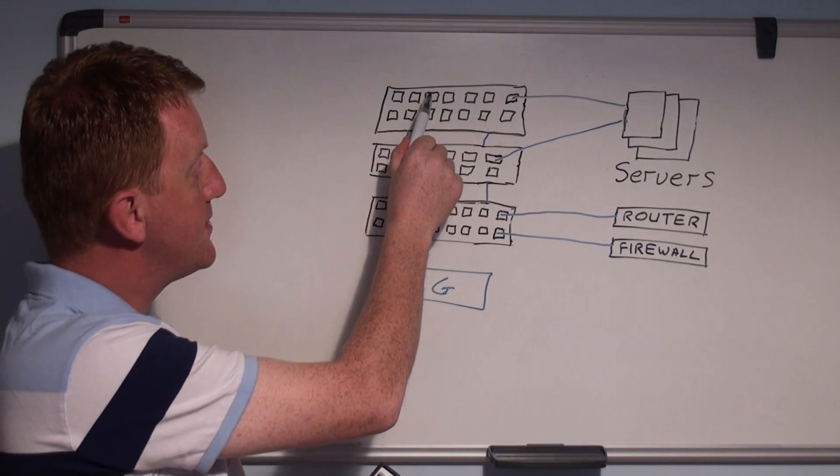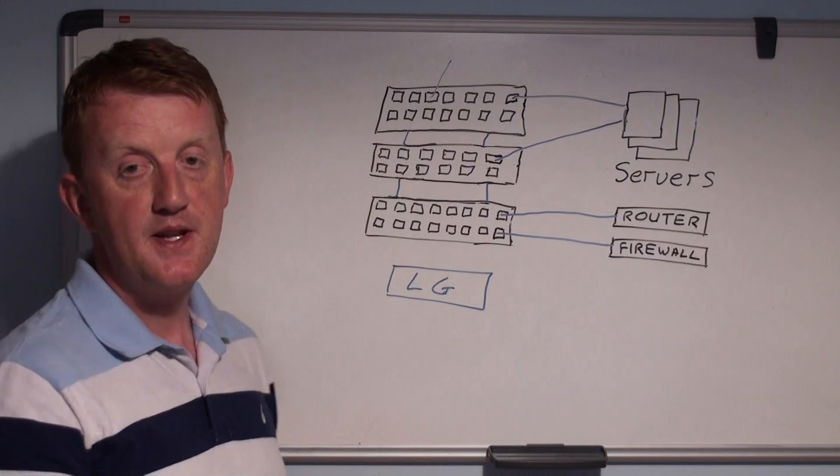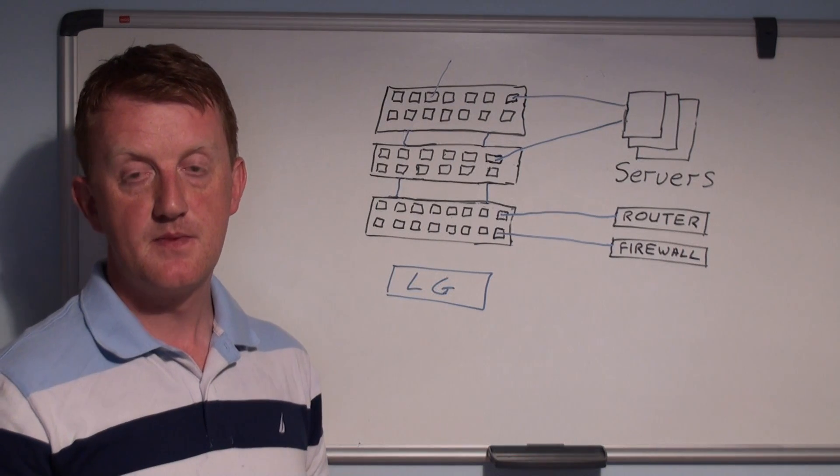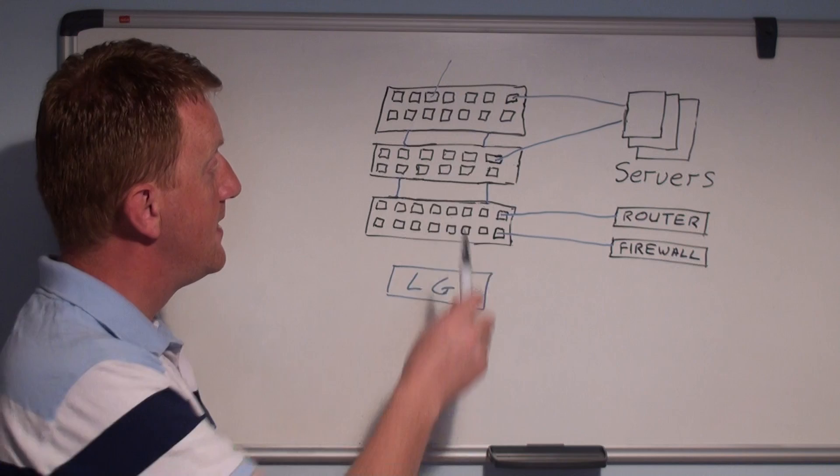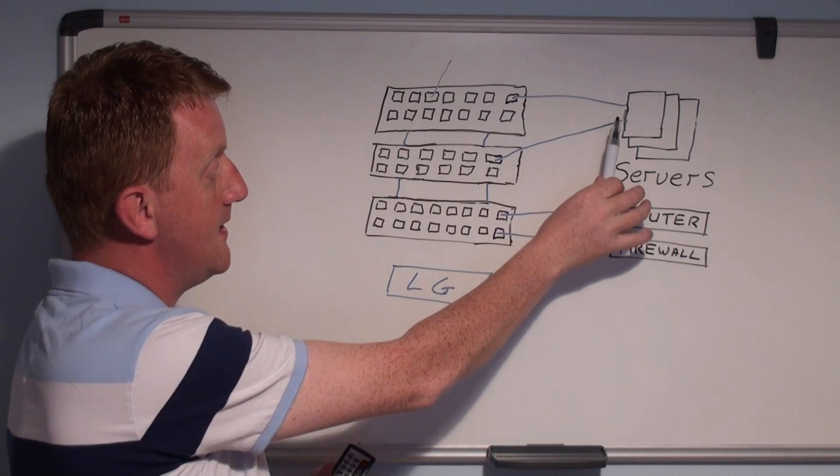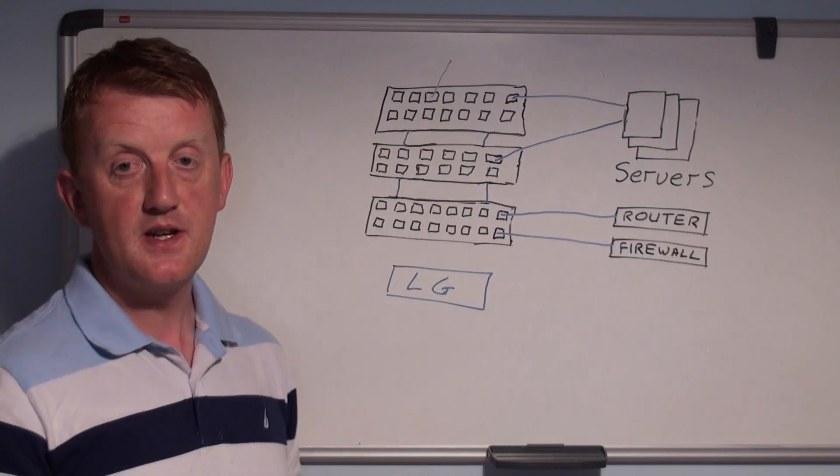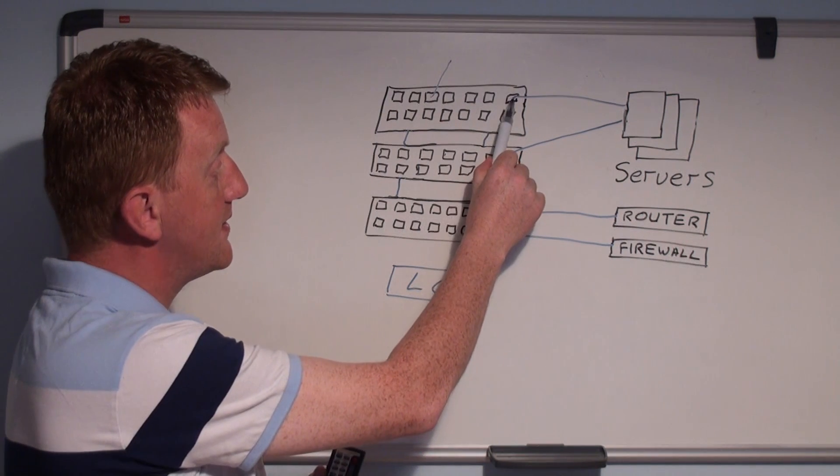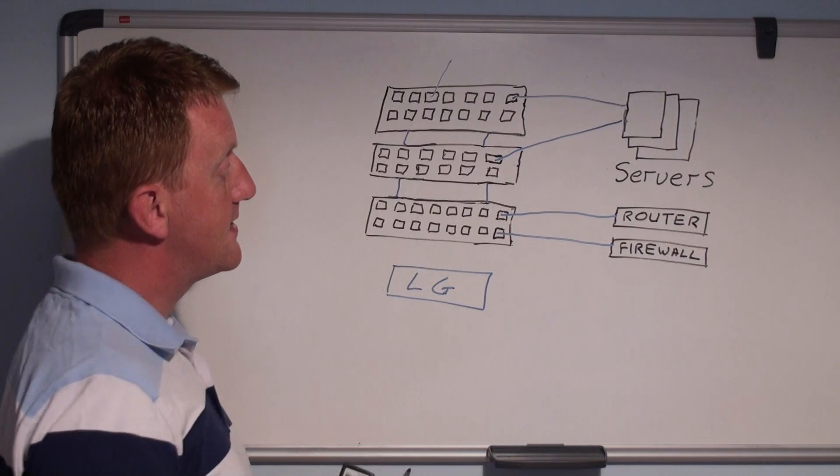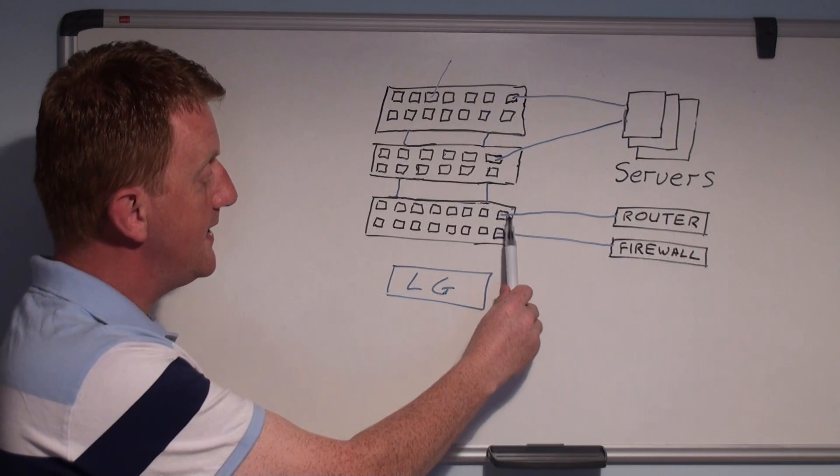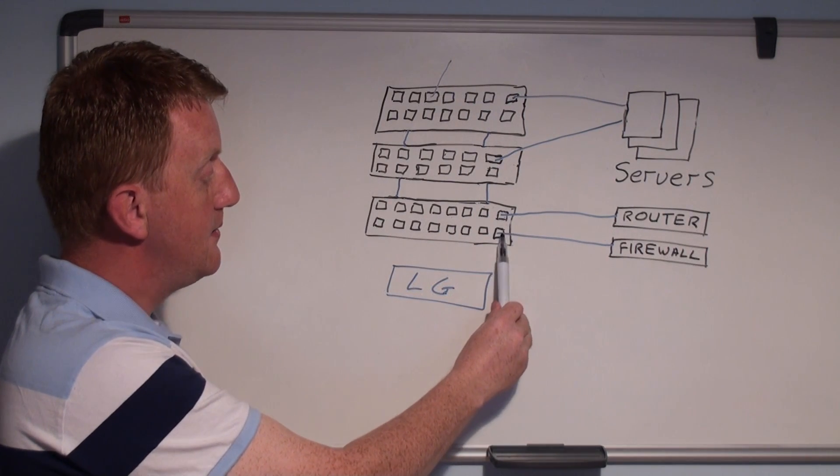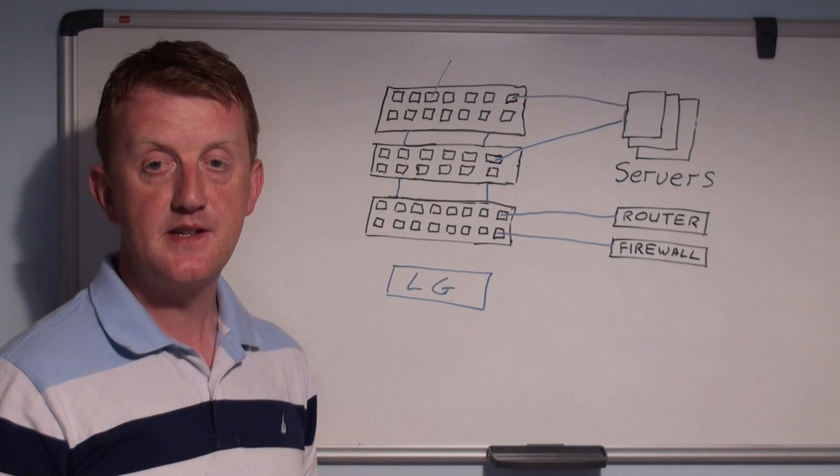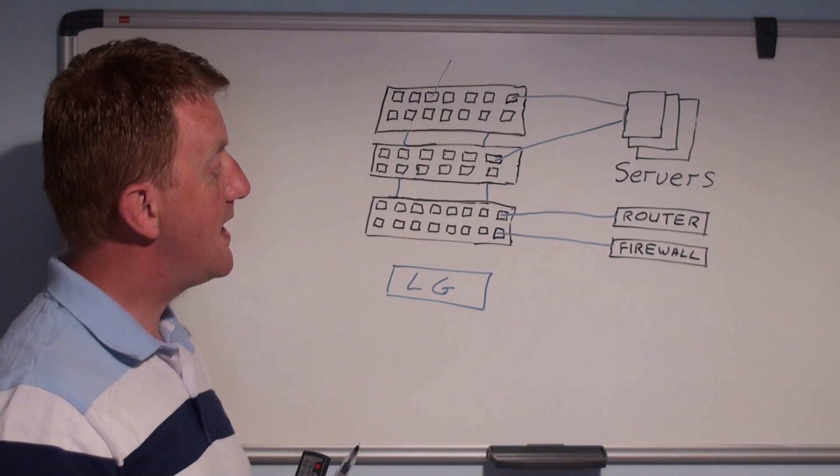We're not interested in tracing back uplinks to client switches or distribution switches. The main thing you're looking for is to document where your file sharing servers are connected, database servers, any key servers that you want to monitor. You also need to trace back where your routers are connected to and where your firewall or proxy connection is connected.